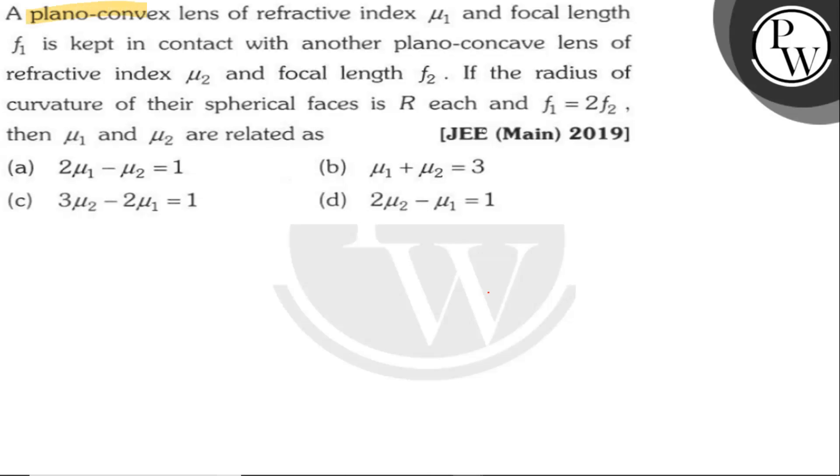Hello guys, so our question is: a plano-convex lens of refractive index μ₁ and focal length f₁ is kept in contact with another plano-convex lens of refractive index μ₂ and focal length f₂.